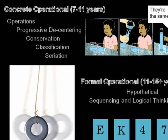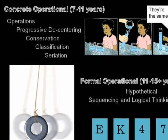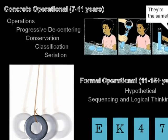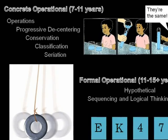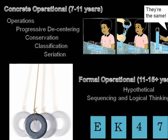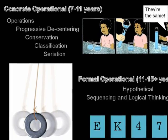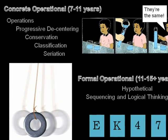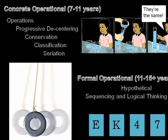At the concrete operational stage, a child will be able to answer the volume jar question posed before, as well as begin to view and understand other people's perspectives rather than simply their own. Children can now classify groups of things or ideas as well as properly order them. Some people, even adults, do not progress past this stage.